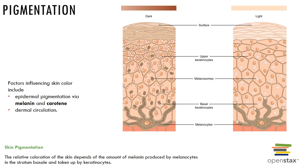Our skin color results from three pigments: melanin, carotene, and hemoglobin. Melanin has variations in hue and intensity from reddish brown to yellow brown to brown-black to black, and is responsible for darker skin colors. Skin tone is determined by the amount of melanin produced, not the number of melanocytes — variations in gene activity produce this variation in color. Freckles and pigmented moles are also local accumulations of melanin.